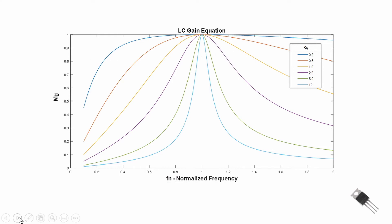Now let's assume we have a constant line voltage — a constant input. But now let's assume that our load is changing. That means we are going to be varying our Q sub E. As we change from one value of Q sub E to another, we will have to change our switching frequency.